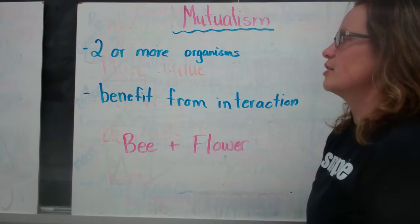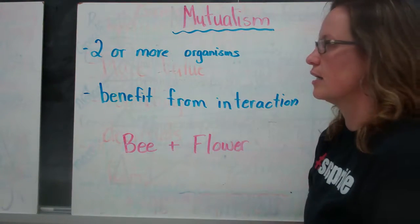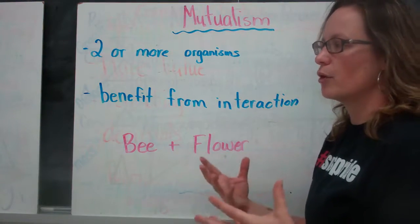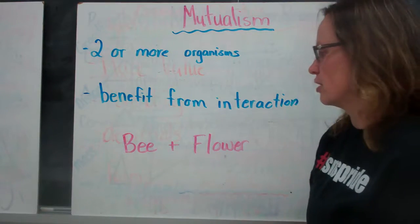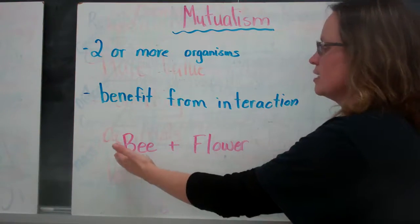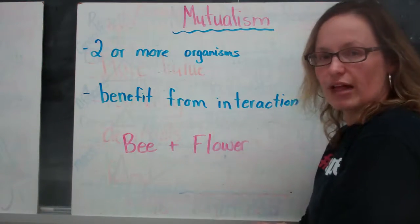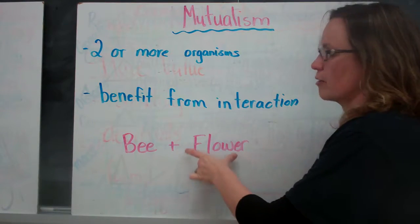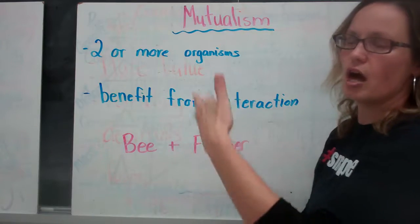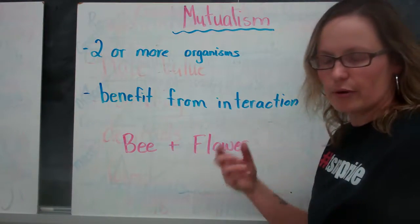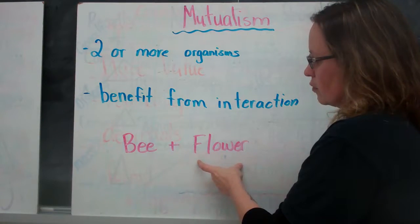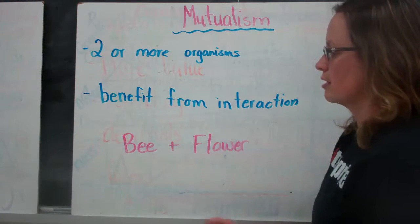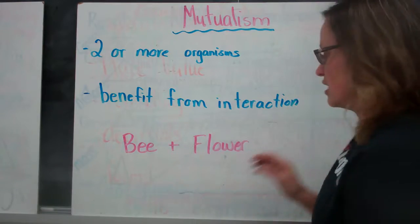Mutualism is an interaction between two or more organisms where both organisms benefit from that relationship — they both get something from that interaction. A great example is a bee and a flower. The bee moves from flower to flower, getting nectar that it needs to stay alive and make honey. As it travels from flower to flower, it spreads pollen, which pollinates them and makes more flowers. Without the bees we wouldn't have the flowers, and without the flowers the bees wouldn't meet their basic needs. This is mutualism — both organisms benefit from the interaction.